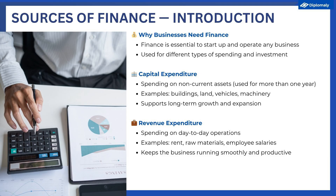There are two types of spending for businesses that you need to know in this course. The first type is capital expenditure, and this refers to spending on non-current assets. Non-current assets are things that the business owns and expects to use for a period of more than one year. These include buildings, land, vehicles, and more.